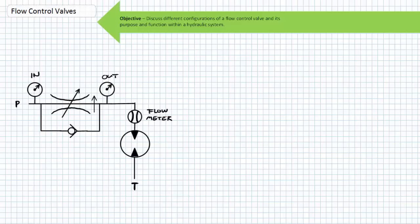If we were to perform this same experiment with a temperature and pressure-compensated flow control valve, we would expect to observe the same flow rate for a range of input and output pressures and a range of temperatures.